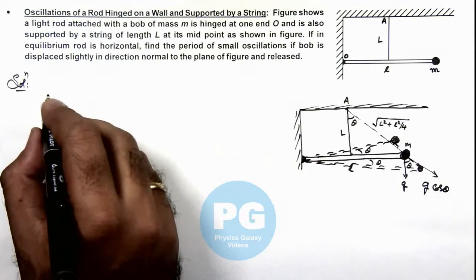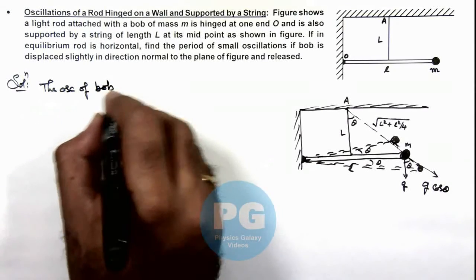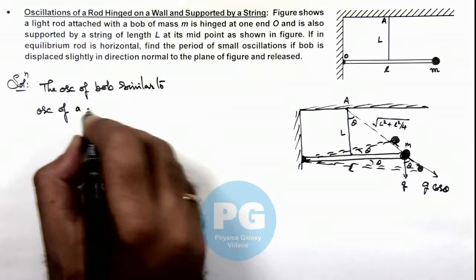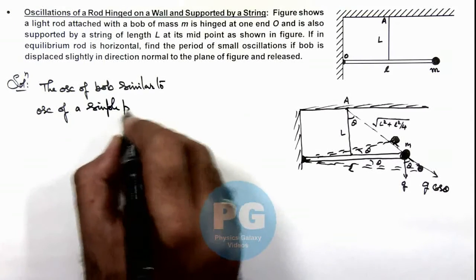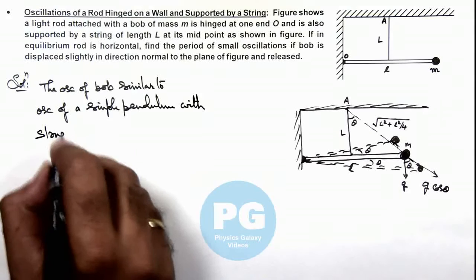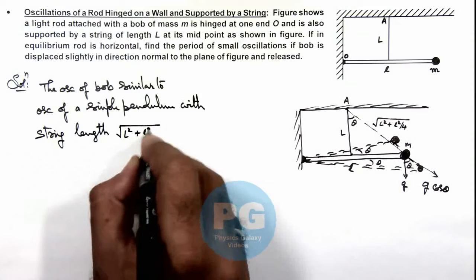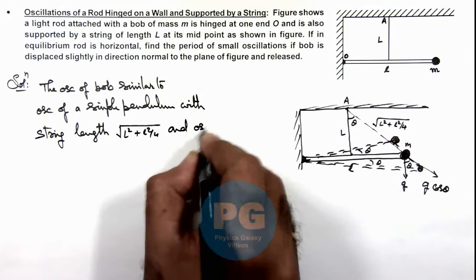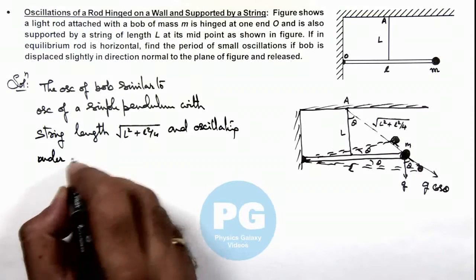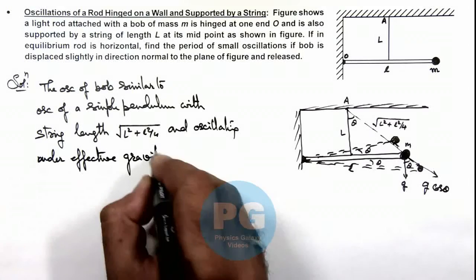We can consider the oscillations of the bob similar to oscillations of a simple pendulum oscillating under effective gravity, where g effective can be given as g cos θ.